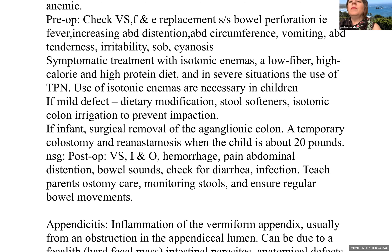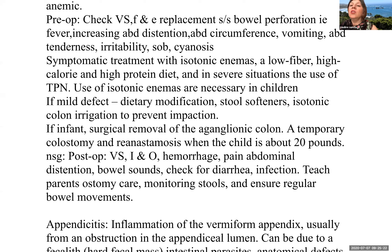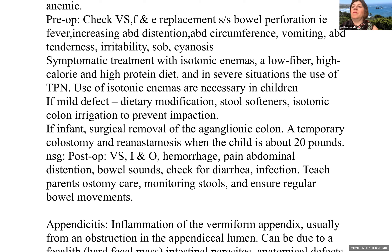Preoperatively as a nurse, check vital signs, fluid and electrolyte replacements, and signs and symptoms of bowel perforation such as fever, increasing abdominal distension, increased abdominal circumference, vomiting, abdominal tenderness, irritability, shortness of breath, and cyanosis. Symptomatic treatment includes isotonic enemas, a low-fiber high-calorie high-protein diet, and in severe situations TPN. If the defect is mild, dietary modifications, stool softeners, and isotonic colon irrigations may prevent impaction. If surgery is required, a temporary colostomy and reanastomosis takes place when the child is about 20 pounds, with the temporary colostomy typically in the newborn period.